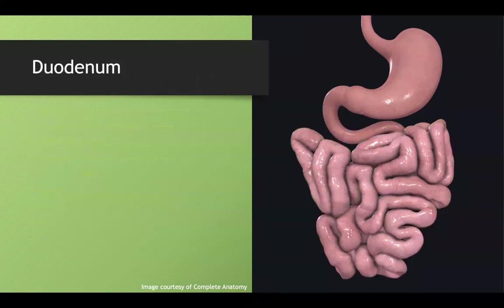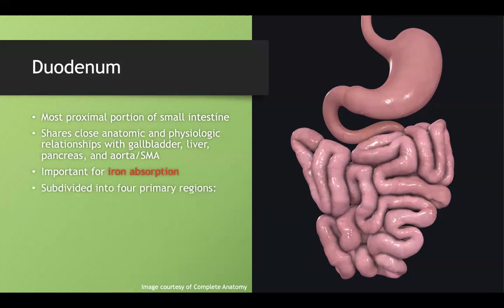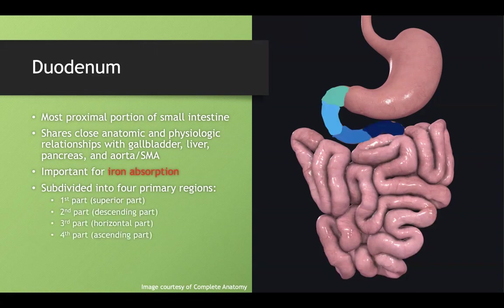The duodenum is the most proximal portion of the small intestine. They like to test its anatomic relationship with associated organs. It is very important for iron absorption — pathologies like celiac disease, which can damage the duodenal epithelium, may present with iron deficiency anemia. The duodenum has four primary parts: the first or superior part, the second or descending part, the third or horizontal part, and the fourth or ascending part.